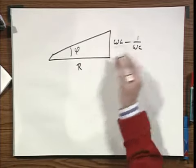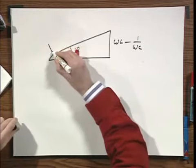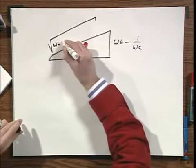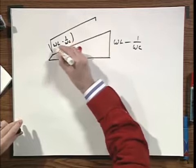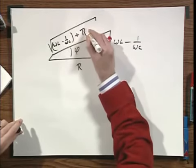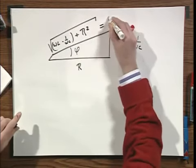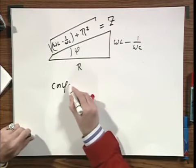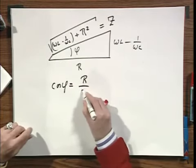That means this here must be the square root of omega L minus omega C squared plus R squared. But that is exactly Z. And so, the cosine of phi equals nothing but R over Z.